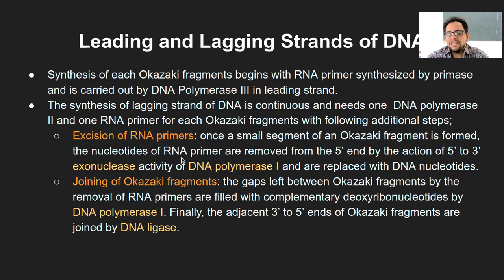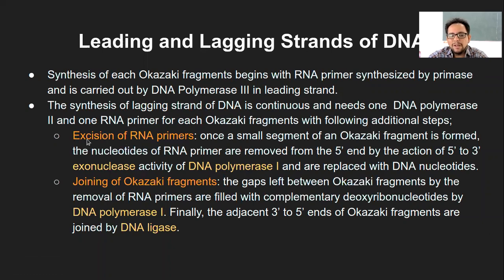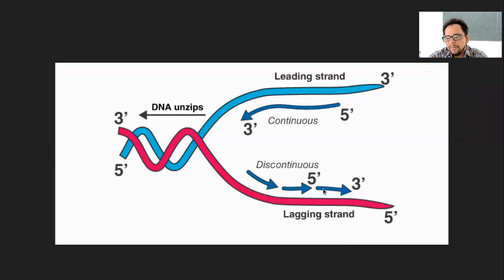The following additional steps happen in the lagging strand compared to the leading strand. The first additional step is the excision of the RNA primers. Once a small segment of Okazaki fragment is formed, the nucleotides of the RNA primers are removed from the 5' end by the action of exonuclease. For example, at the start of the first Okazaki fragment, there will be RNA primer molecules — the first few base pairs are the RNA primer in that first Okazaki fragment.